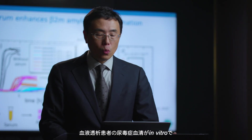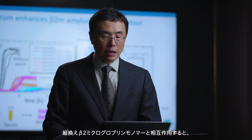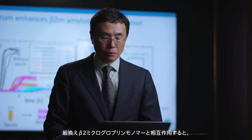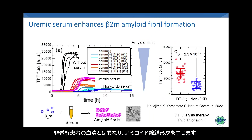When uremic serum from hemodialysis patients interacts with recombinant beta-2-m monomers in vitro, it triggers amyloid fibril formation, unlike serum from non-CKD patients.